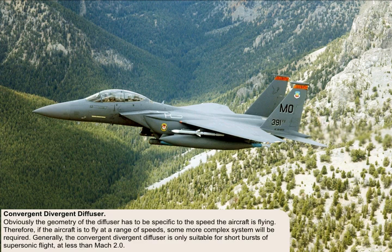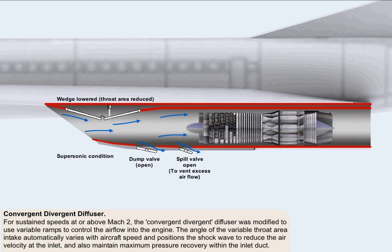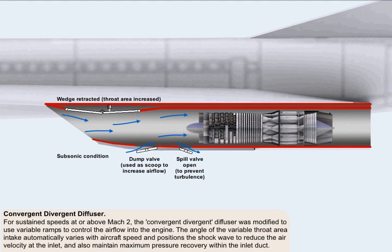Generally, the convergent-divergent diffuser is only suitable for short bursts of supersonic flight at less than Mach 2, such as on the F-15 fighter shown here. For sustained speeds at or above Mach 2, the convergent-divergent diffuser was modified to use variable ramps to control the airflow into the engine.